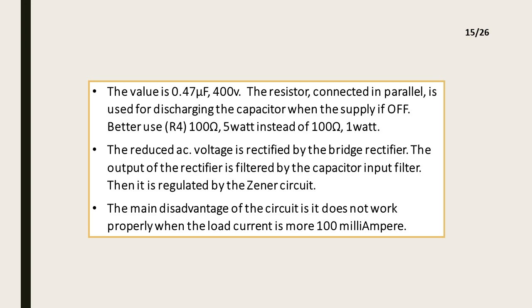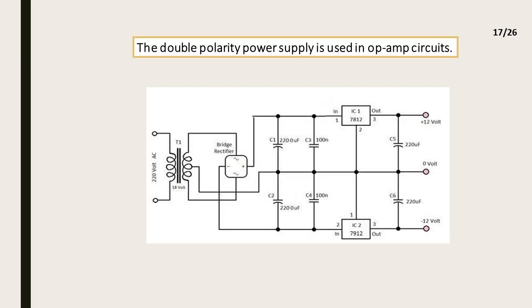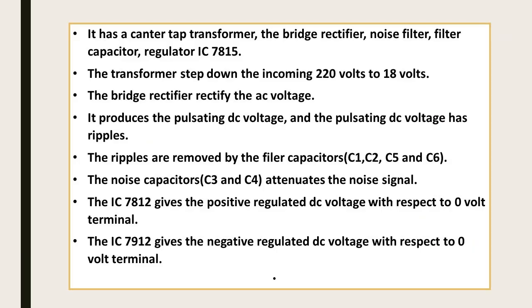The main disadvantage of the circuit is it does not work properly when the load current is more than 100 milliampere. Double polarity power supply. The double polarity power supply is used in op-amp circuits. It has a center tap transformer, the bridge rectifier, noise filter, and filter capacitor.